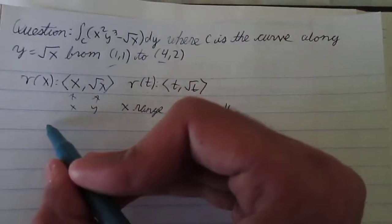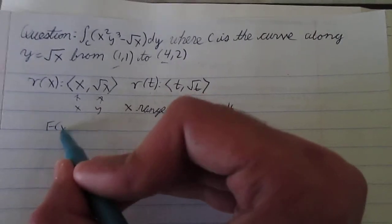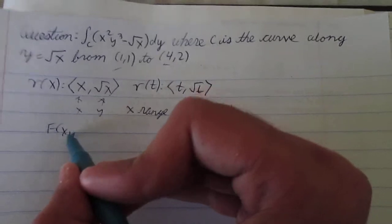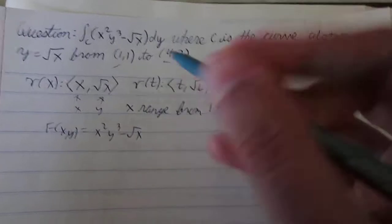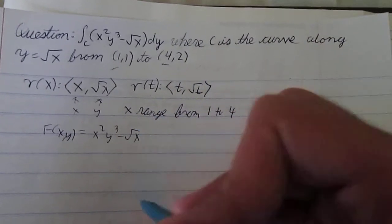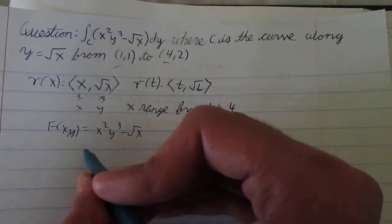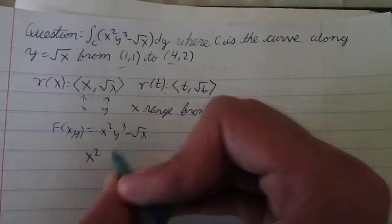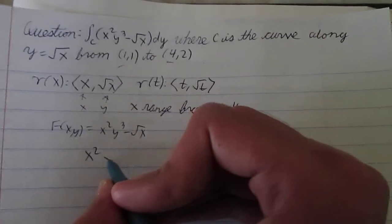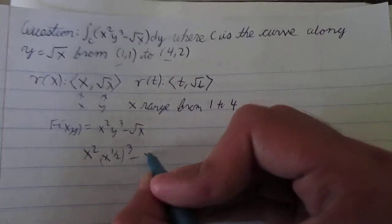So, now if you look at the integrand, which is our f of x, y, our integrand is x squared y cubed minus square root of x. We have to rewrite this in terms of just x. So that's basically going to be, well, x squared stays the same. Now, what is y cubed? Well, y is just x to the 1 half cubed, minus x to the 1 half.